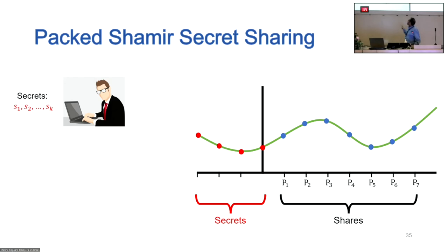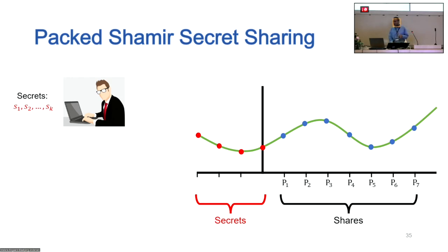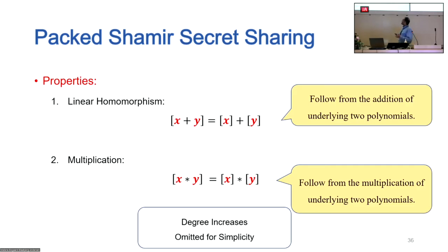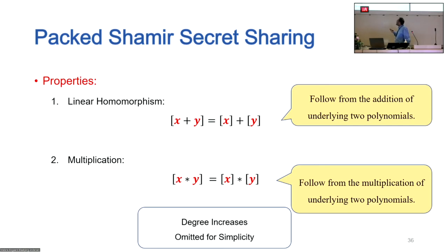Packed Shamir secret sharing works as follows: we choose a single polynomial, and parties P1, P2, ..., Pm get points on the polynomial as their shares. Multiple points on the polynomial encode secrets — we encode k secrets, where k is the packing parameter. Many natural properties are preserved: it is linearly homomorphic — add shares of X and Y to get shares of X+Y. You can also multiply shares of X and Y to get a share of X·Y, though the degree increases, requiring degree reduction. So we have both additive and multiplicative homomorphism.